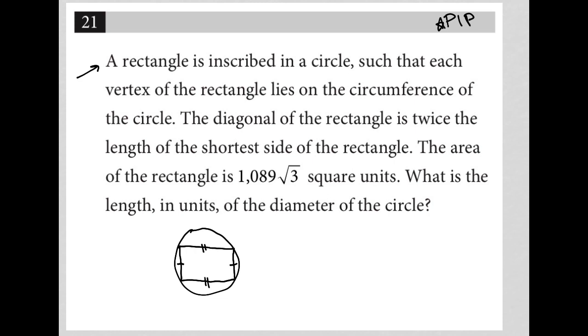A rectangle is inscribed in a circle such that each vertex of the rectangle lies on the circumference of the circle. The diagonal of the rectangle is twice the length of the shortest side of the rectangle. So if I call the shortest side of the rectangle side X, then that means that my diagonal is 2X.